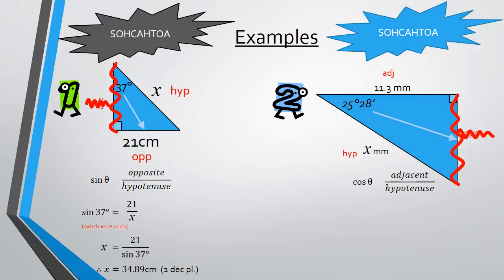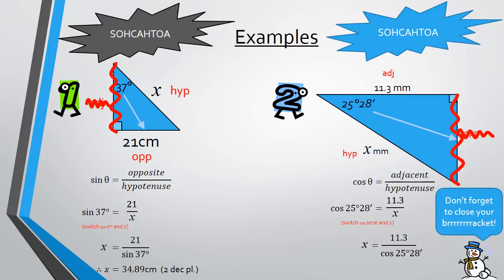And then we're going to replace all of our information in that equation. And we're going to get cos 25 degrees 28 minutes equals 11.3 over x. And again, x is on the denominator. And so we're going to switch cos 25 degrees 28 and x in order to be able to calculate it. Snowman's come back. He's tough. Okay. Don't forget to close your brackets. And typing that in the calculator should give you 12.52 millimeters, correct to two decimal places.